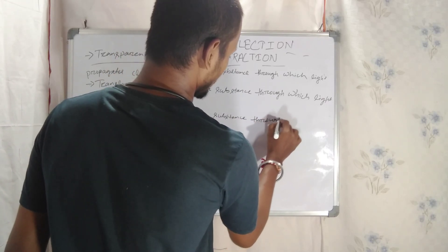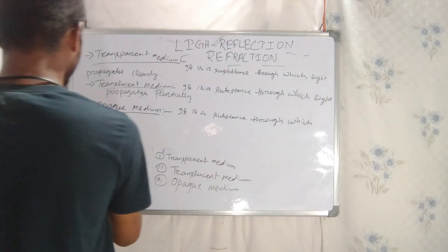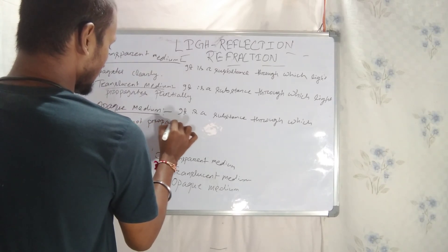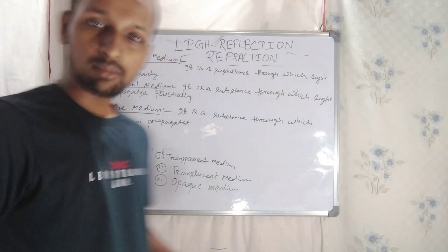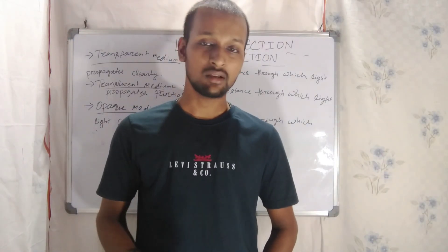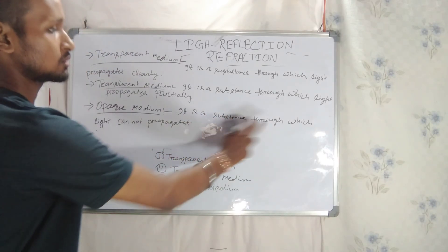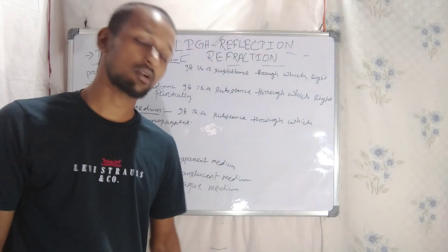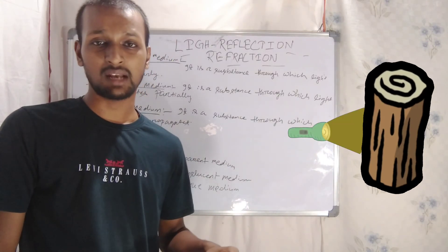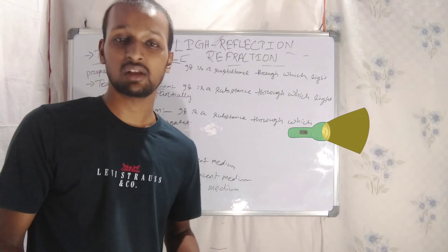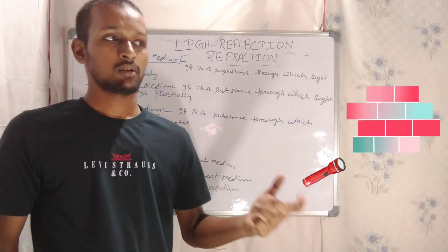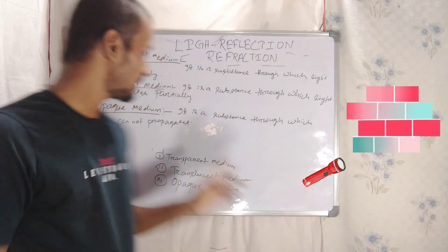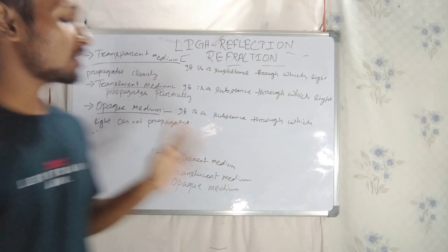The third type is opaque medium. An opaque medium is a substance through which light cannot propagate. Light cannot pass through an opaque medium at all.